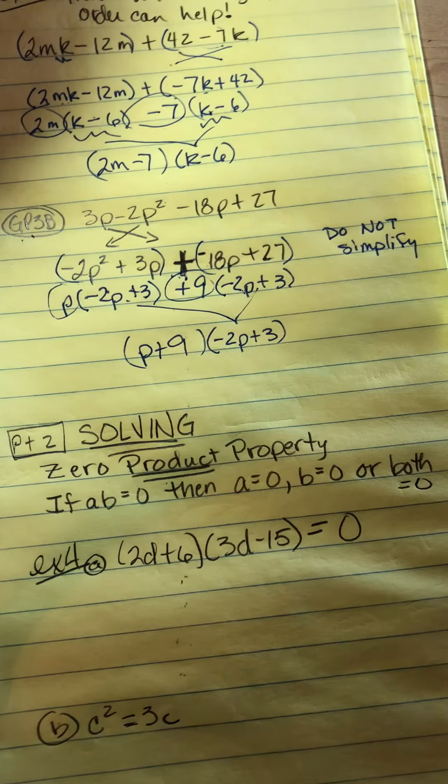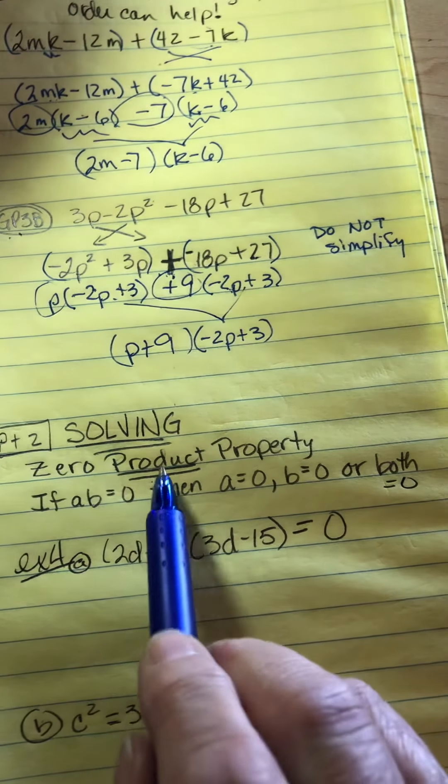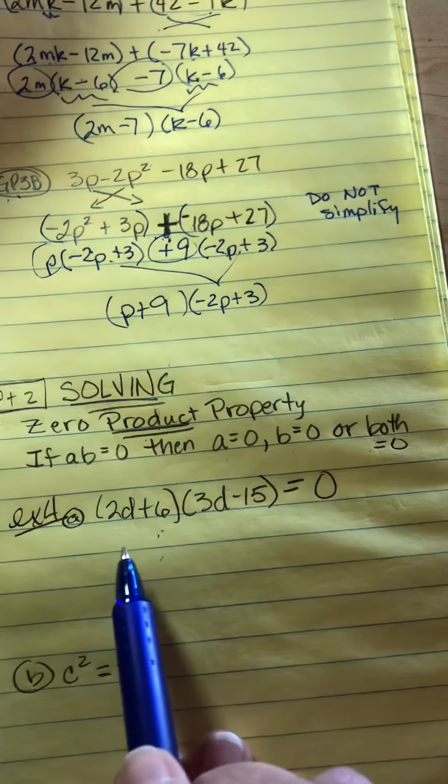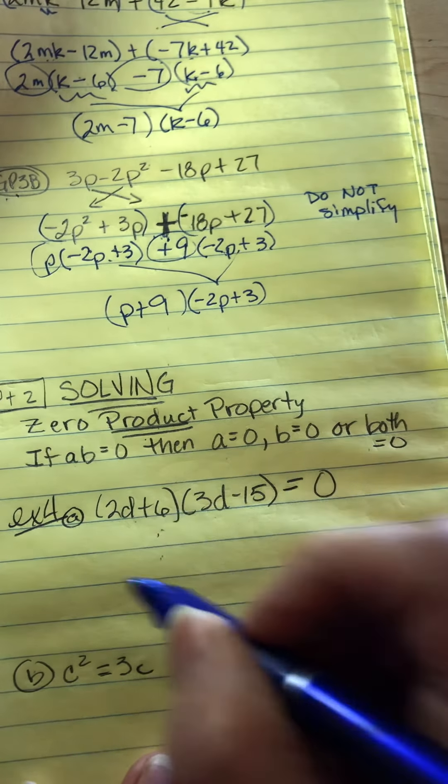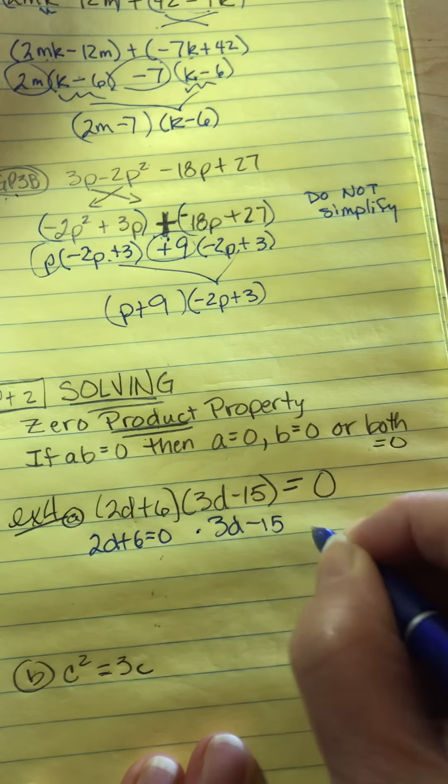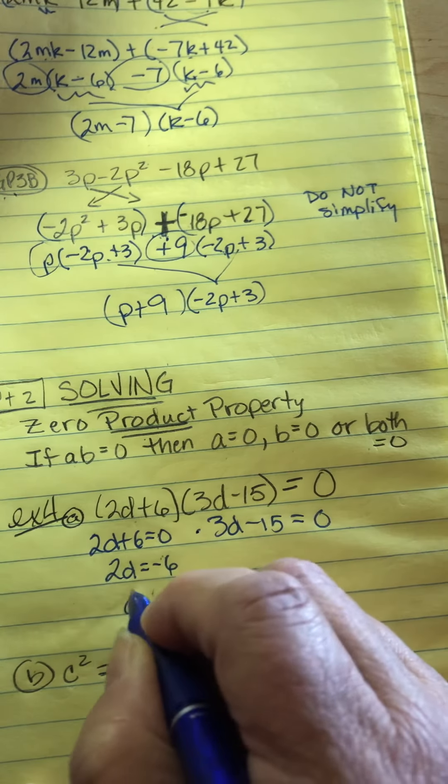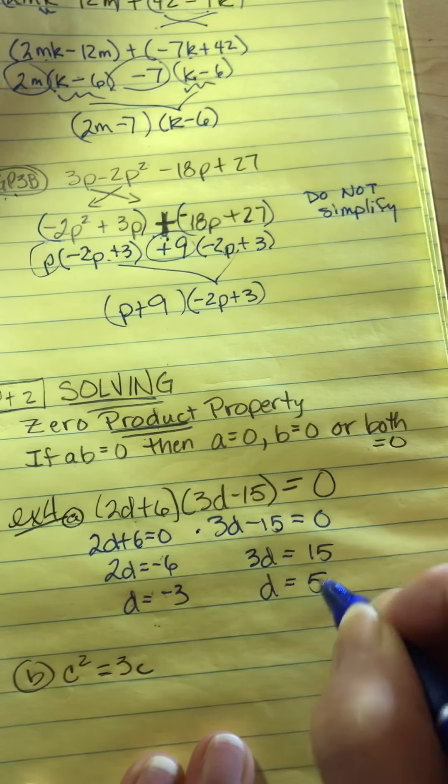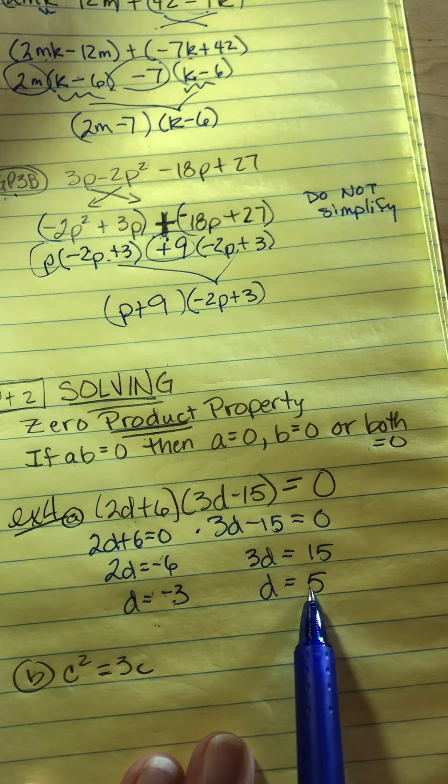Now, part 2 is about solving. The zero product property says that if A times B equals 0, then A equals 0, B equals 0, or they both equal 0. Look at example 4. They did all the work. They already factored it. Don't FOIL it. I just have to figure out 2D plus 6, what makes that equal to 0? And 3D minus 15, what makes that equal to 0? So, subtract 6 from both sides. 2D equals negative 6. D equals negative 3. Add 15 to both sides. 3D equals 15. D equals 5. So, that means that if D is negative 3, it's going to equal 0. If D equals 5, it's going to equal 0.